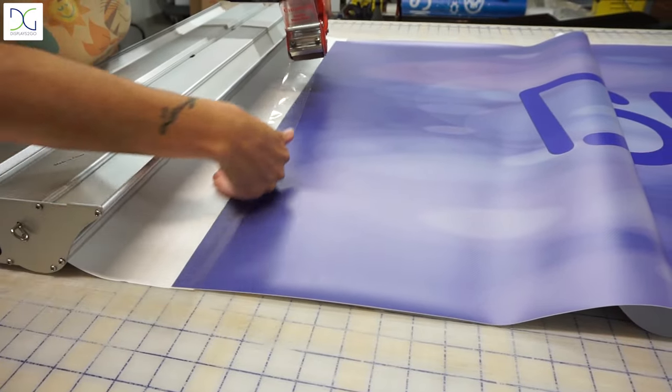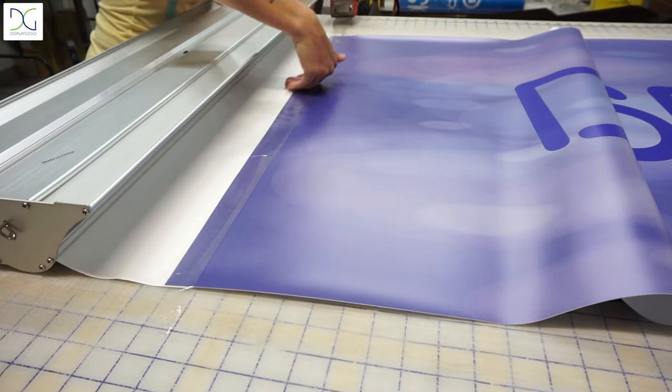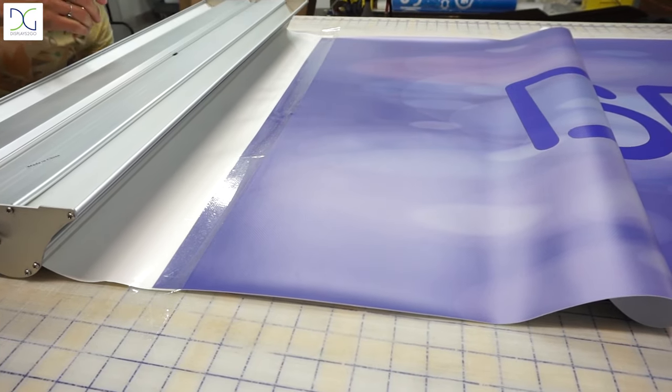You can go ahead and untape them from the table now. We like to apply a second layer of tape to make sure that the banner does not come unattached during retraction. Regular packing tape will do the trick.